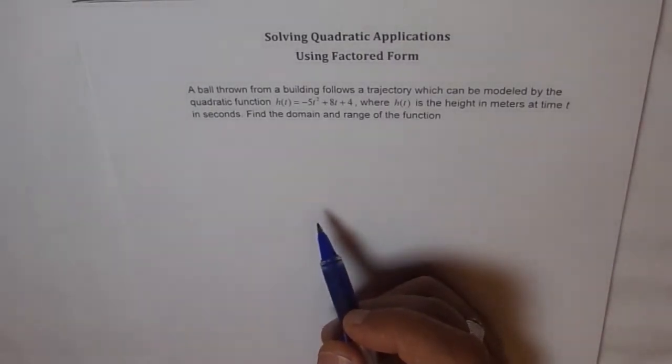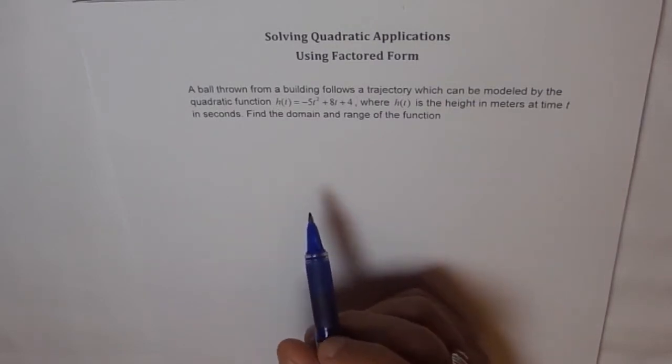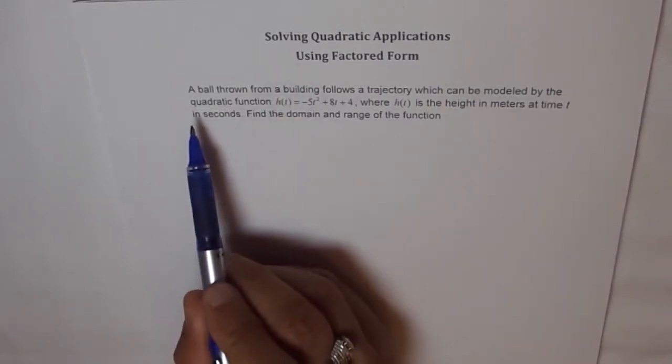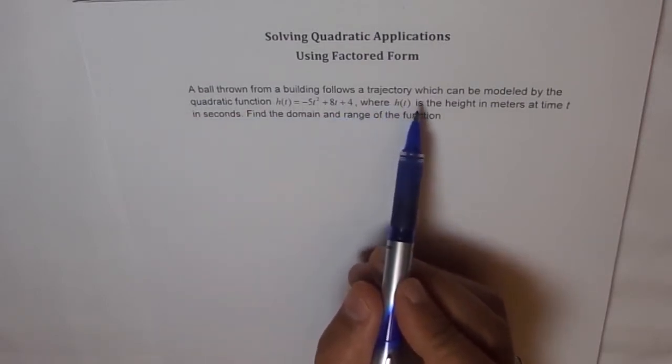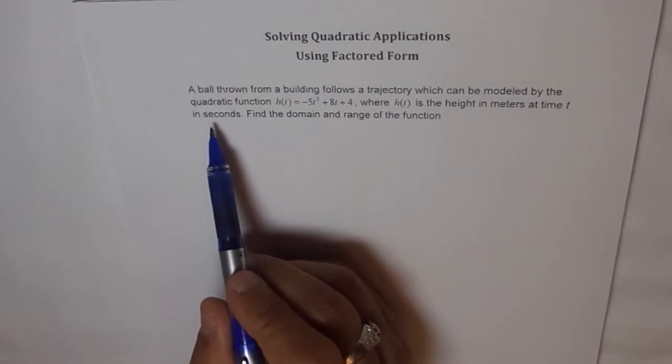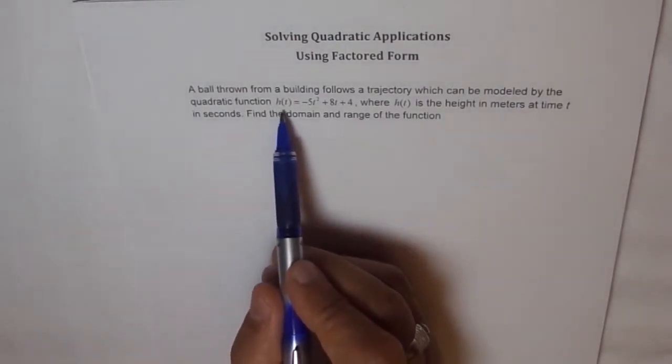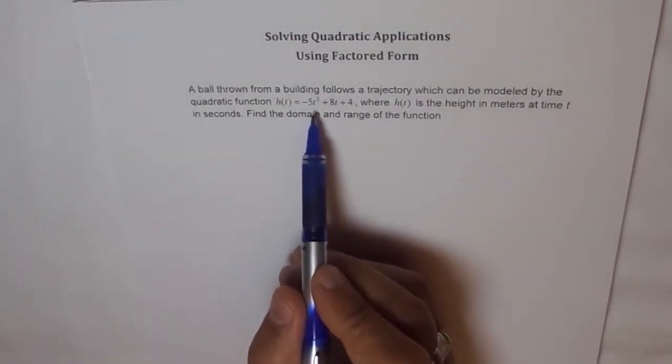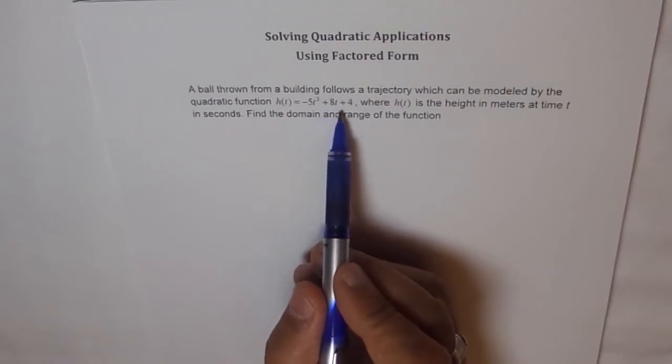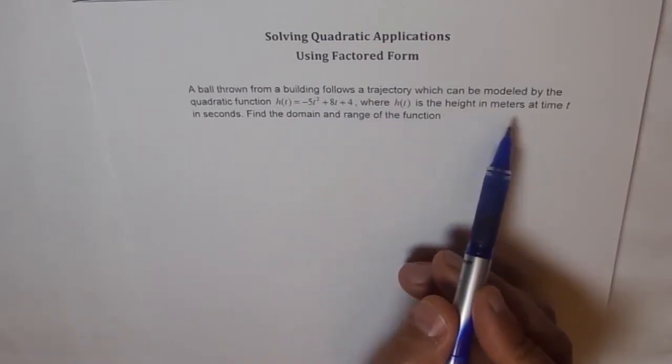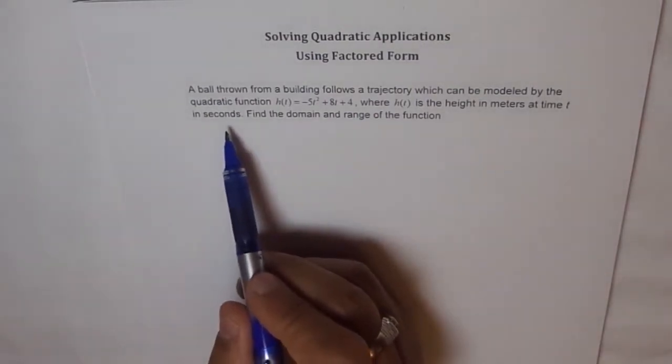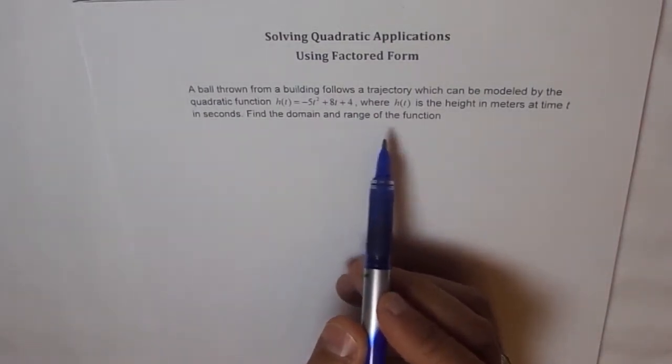We will use the factored form to find the answer. The question here is: a ball thrown from a building follows a trajectory which can be modeled by a quadratic function h(t) equals minus 5t squared plus 8t plus 4, where h(t) is height in meters at time t in seconds. Find the domain and range of the function.